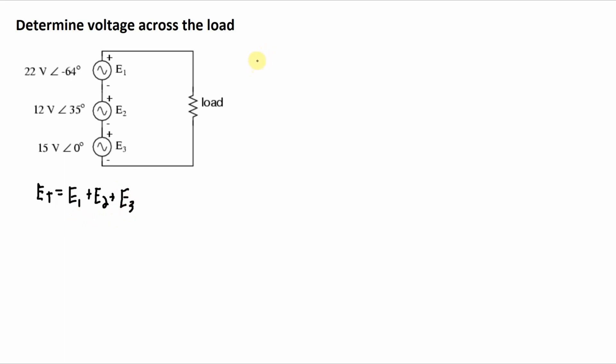So I'll start with the bottom number first. So 15 volts with a phase angle of zero degrees. That's the easy conversion. That's 15 volts plus J0.